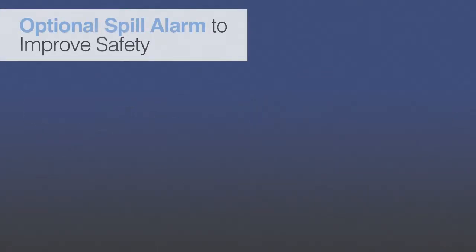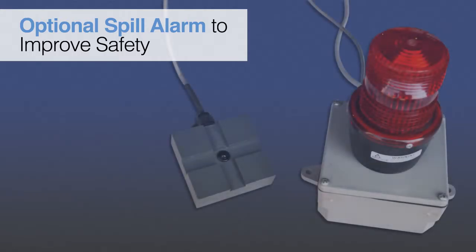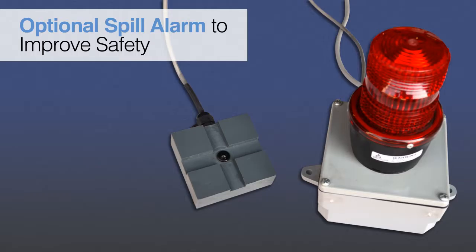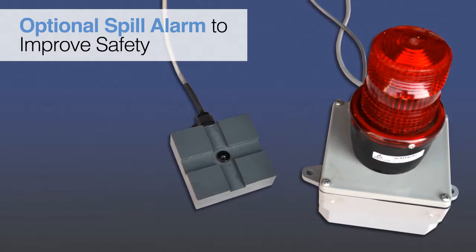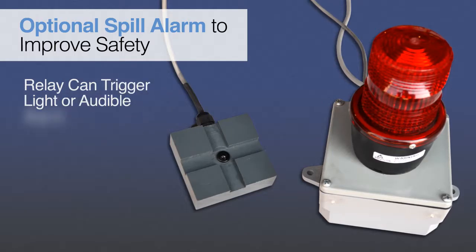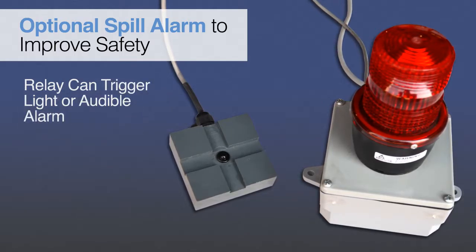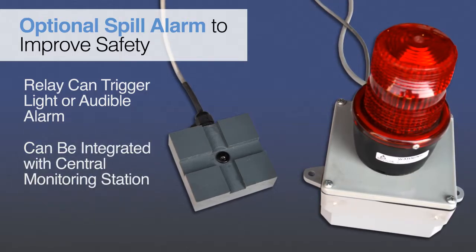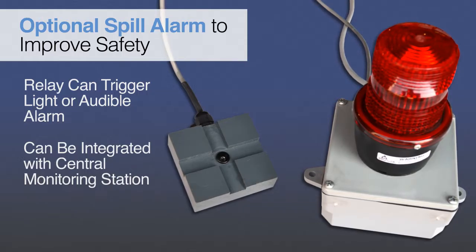Ideal for industrial and chemical process applications, the spill alarm sensor utilizes a photo transistor to detect spills and activate a relay switch. The relay may be used to trigger a light or an audible alarm. Additionally, the relay is readily integrated via PLC with other equipment or a central monitoring station to facilitate automatic shutdowns, lockouts, and other safety procedures.